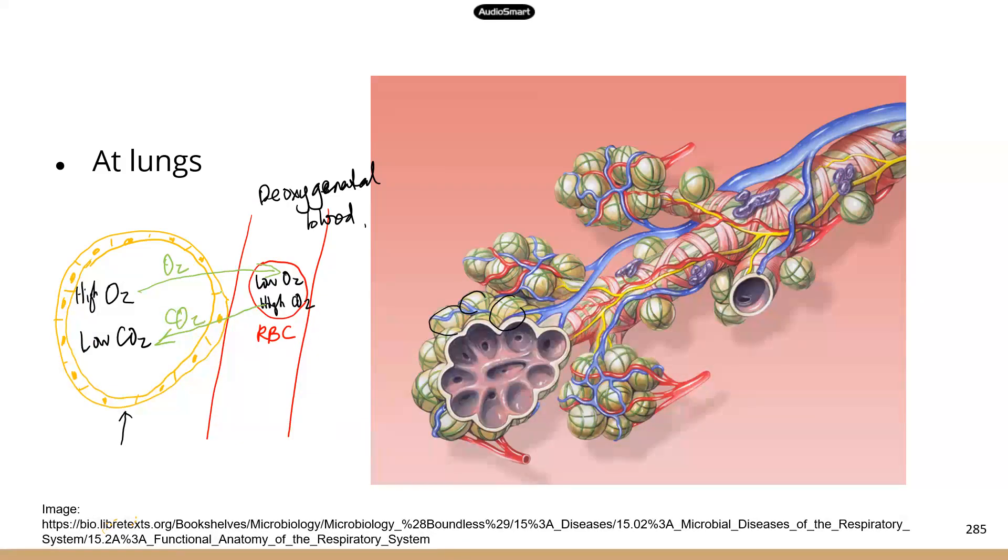And as you can imagine, at the end of gas exchange at the lungs, we have oxygenated blood again. Because oxygen moves into the blood, carbon dioxide comes out of the blood. So now you have the good blood again.